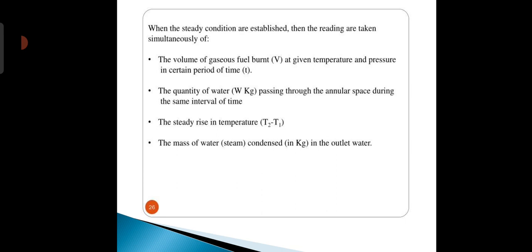When the steady conditions are established, then the readings are taken simultaneously of the volume of gas fuel burned V at given temperature and pressure in a certain period of time T, the quantity of water W kg passing through the annular space during the same interval of time, the steady rise in temperature T2 minus T1, and the mass of water or steam condensed in kg in the outlet water.